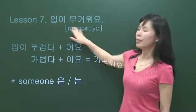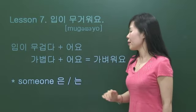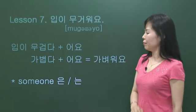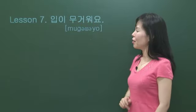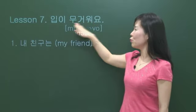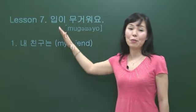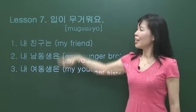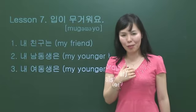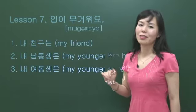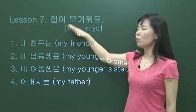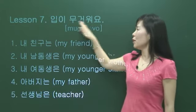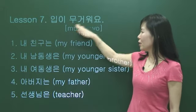Someone은 — this is a predicative verb, so we need a subject with a marker. This time we're going to use the topic marker instead of a subject marker. Someone은 입이 무거워요. For example: 내 친구는 입이 무거워요 — my friend. 내 남동생은, 내 여동생은, 입이 무거워요 — my younger brother and younger sister are very reliable. 아버지는 입이 무거워요. 선생님은 입이 무거워요.